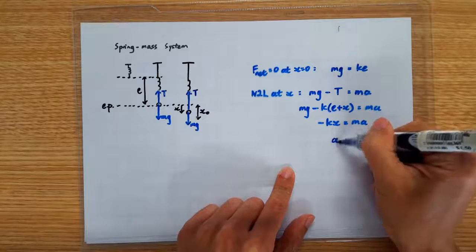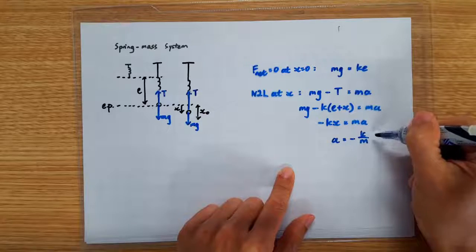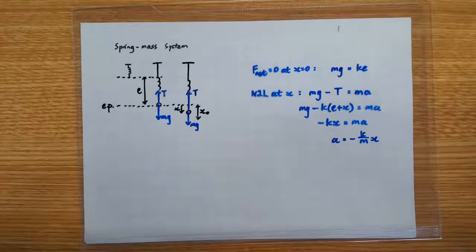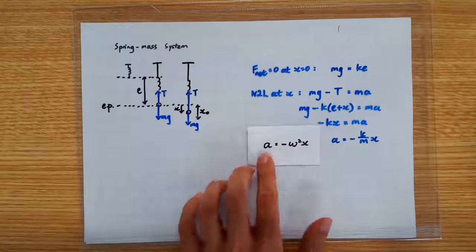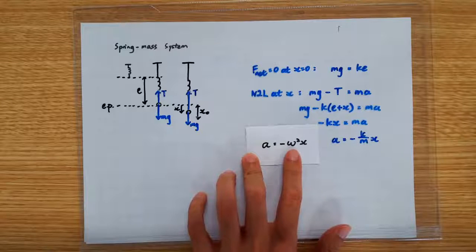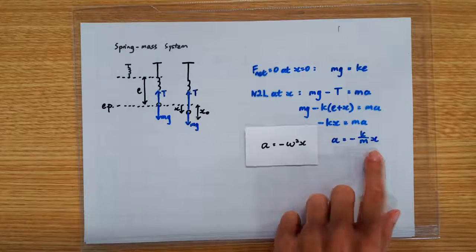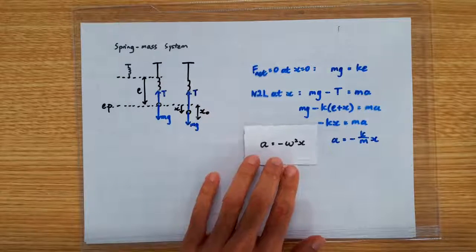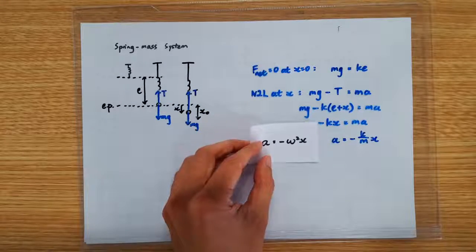Let me rearrange this equation. You get acceleration equals negative k over m times x. We know that for SHM, A must equal negative omega squared times x, where omega squared is a constant. Here we have A equals negative k over m times x, and k over m is a constant for a particular spring-mass system. So this tells us that a spring-mass system is indeed an SHM.